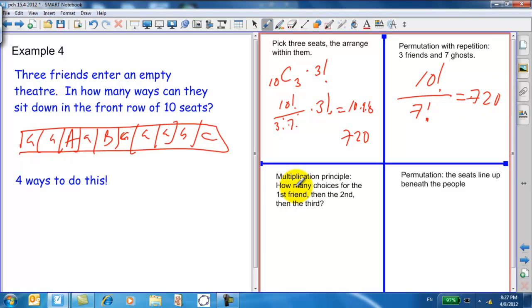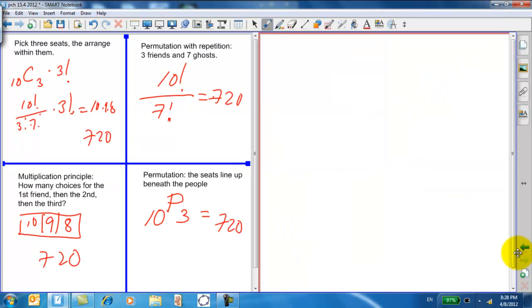You can also go back to your multiplication principle. That is, the first friend walks in the theater, and how many choices do they have? They have 10 choices of seats. Now that he's used up one, the next friend, she's only got nine choices of seats. And then the third friend, it's only got eight. So, 10 times 9 times 8 is 720. And lastly, permutations. The seats can line up beneath the people. And actually, you animate the seats, and they arrange themselves underneath the people's seat. So, you've got 10 seats, and you're choosing three, but you care about the order, so it's 10p3. And that works out to be 720 as well. Okay, a lot of different ways to look at that. Flange out.